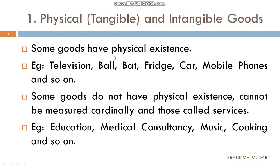Starting with the first type — physical or tangible and intangible goods. Some goods have physical existence. For example: television, ball, pad, fridge, car, mobile phones, and so on. Take the example of a television — you can touch it, you can feel it, you can use it.